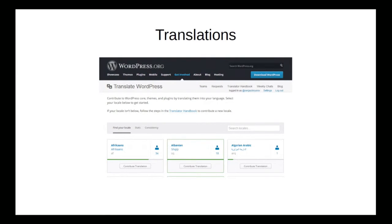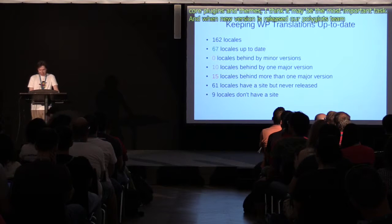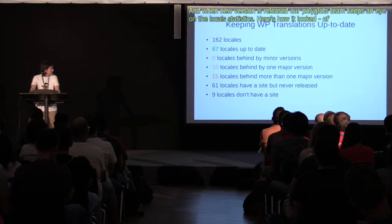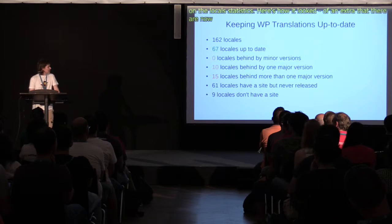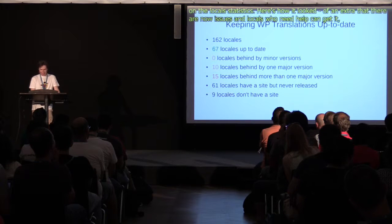An important task for local communities is to provide translations for WordPress core, plugins, and themes — I think it's maybe the most important task. When a new WordPress version is released, the Polyglots team keeps an eye on the local stats and makes sure that there are no issues and that locales that need some help can get it. We want to make sure that WordPress is translated into as many languages as possible.